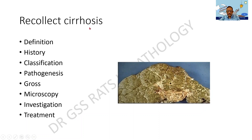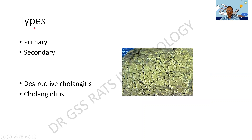Recollect the term cirrhosis. Cirrhosis is supposed to be an effacement of architecture. The word cirrhosis means hard — it becomes nodular and there is a change in the structure of the liver. There are two types of biliary cirrhosis: one is primary and the other is secondary. There are other terms such as destructive cholangitis and cholangiolitis. Primarily it is a disorder of the biliary tree.